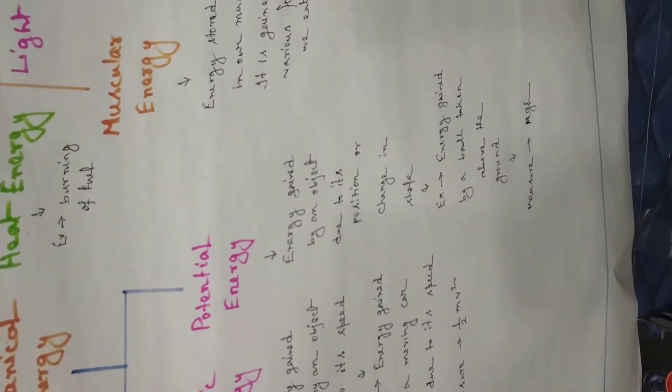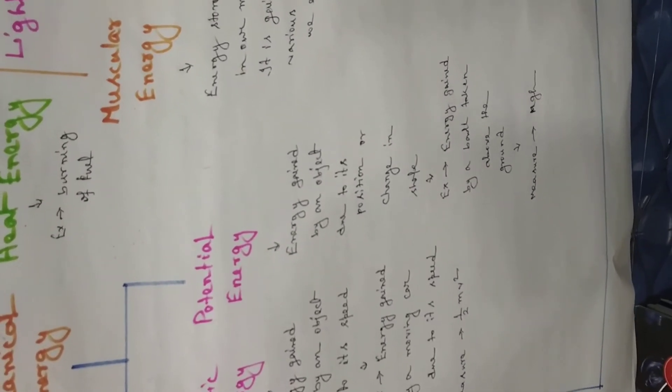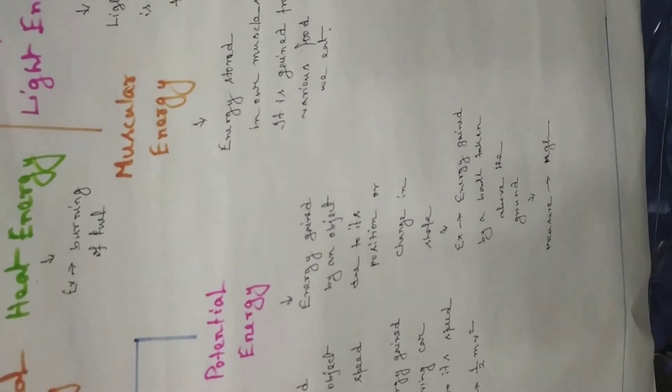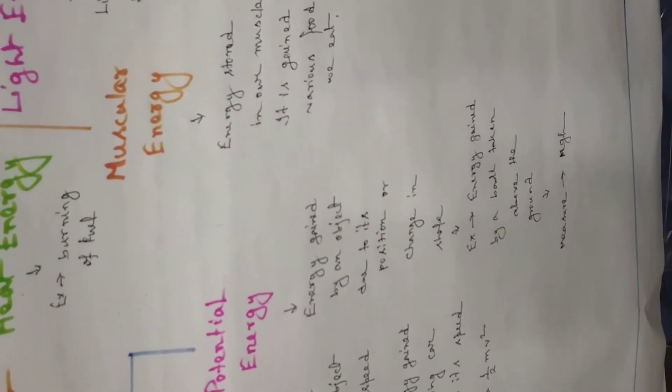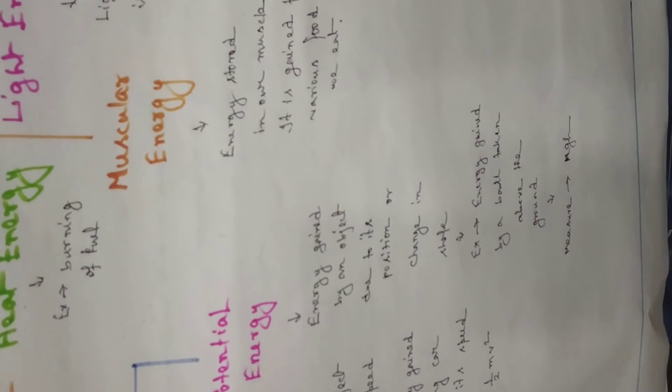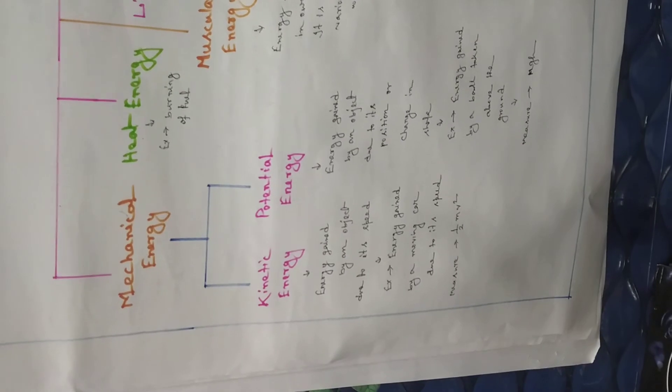For example, suppose you have taken a ball of mass 5 kilograms to a height of 10 meters above the ground. Then the potential energy stored in that ball will be 5 into 10 into gravitational acceleration, which is either 9.8 or 10. So these are the two types of mechanical energy. Mechanical energy is the energy gained by an object due to its motion, its position, or its shape.